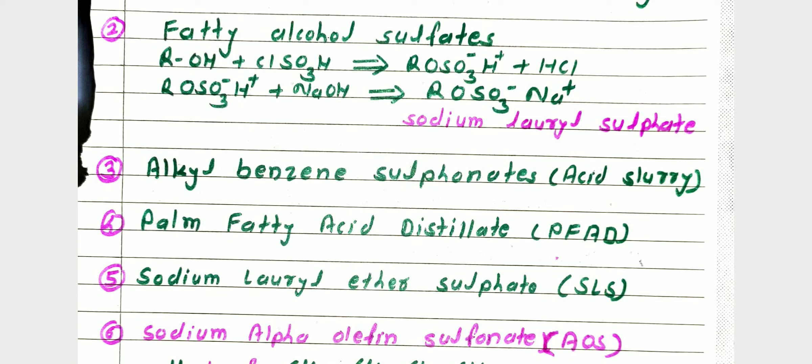The fifth raw material is sodium lauryl ether sulfate (SLS) — S for sodium, L for lauryl, S for sulfate. Sodium lauryl ether sulfate is a very versatile surfactant; it is effective and inexpensive, used in many hand washes, shampoos, and toothpaste.